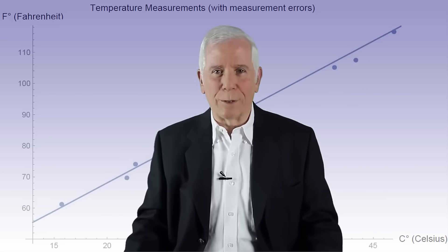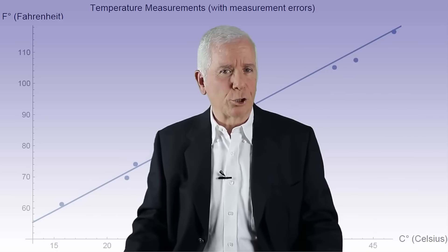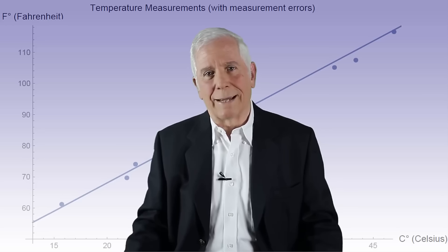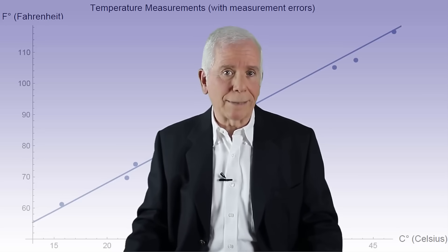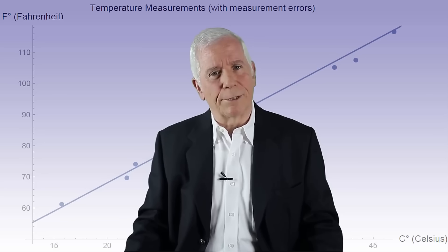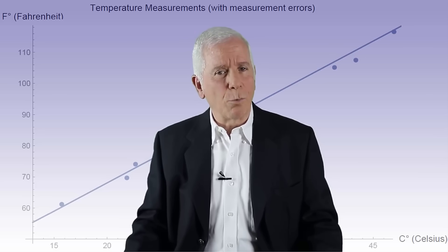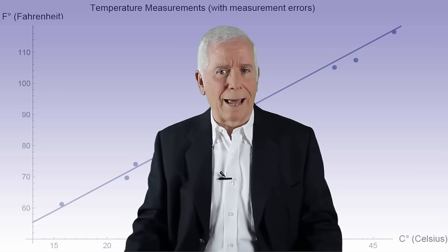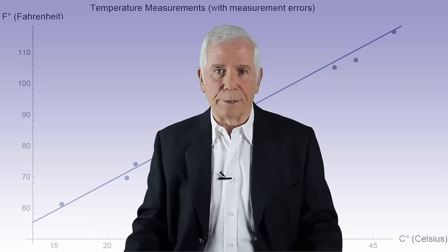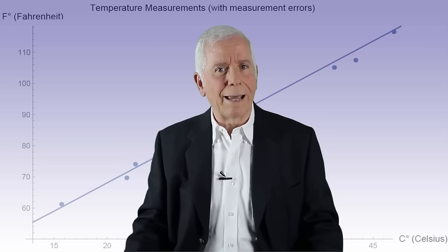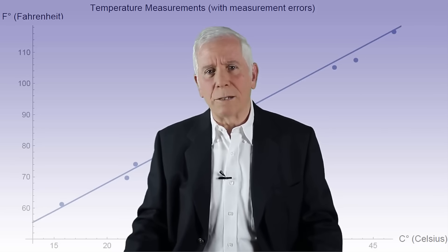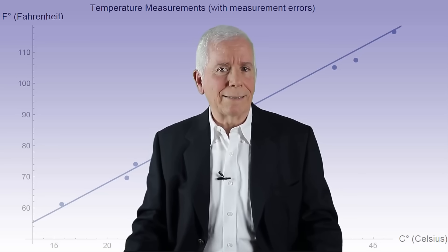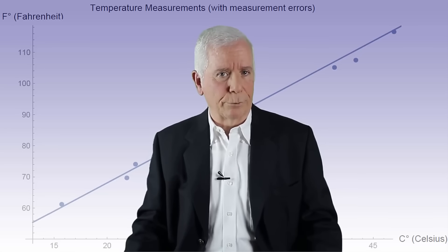The question of whether the points are close enough to a straight line so that we can state that there is a linear relationship between the two scales, between the two axes, cannot be answered arbitrarily. It requires using statistical analysis that will determine in an objective manner that indeed a linear relationship between the two axes does exist. In other words, that there is a statistically significant linear association.